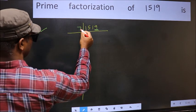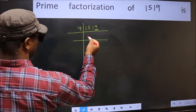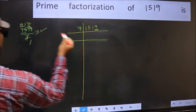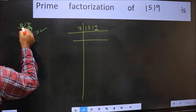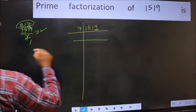So we take 7 here, and we write the result: 217.